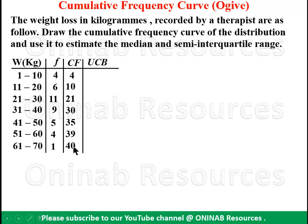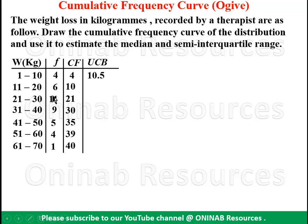So the total population in this distribution is 40. Now we get the upper class boundary. The upper class boundary of the first class interval is the upper limit plus the lower limit divided by 2. So 10 plus 11 divided by 2 gives 10.5.